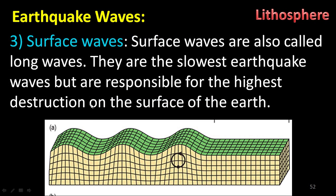Surface waves are also called long waves. They are the slowest earthquake waves but are responsible for the highest destruction on the surface of the earth. Compared to primary and secondary waves, surface waves are the slowest, yet they cause the most dangerous destruction on the earth's surface.